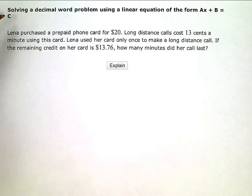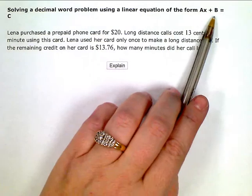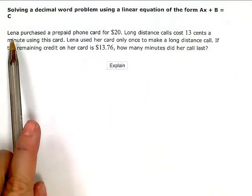Solving a decimal word problem using a linear equation of the form AX plus B equals C. And here's my problem.